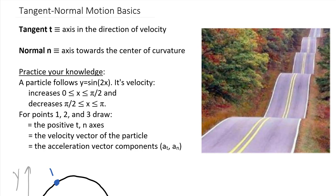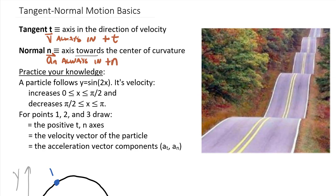That acceleration toward the center of curvature is the normal acceleration. So the normal axis is always going to be towards the center of curvature. To reiterate: the positive tangential axis is in the direction of velocity, so our velocity vector is always in the positive t-direction, and our normal acceleration a_n is always in the positive normal axis direction. If the velocity changes direction, so does the tangential axis; if the curvature changes direction, so does the normal axis. These axis systems actually move with the particle, whereas an XY Cartesian axis system always stays in one place.